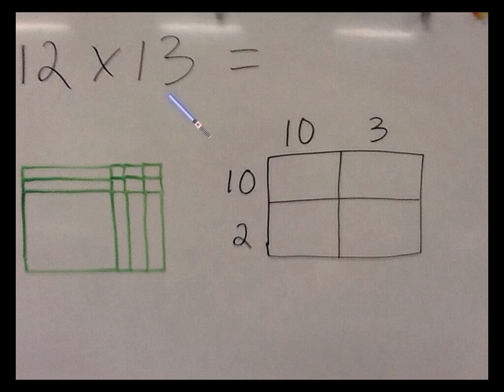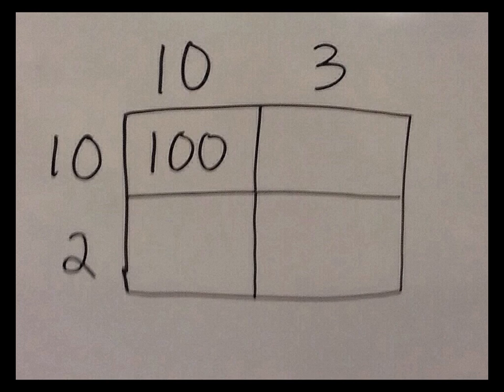Now this time let's start with this quadrant here, which means we're going to multiply 10 times 10. Just pretend this is a regular rectangle: 10 length, 10 width. We multiply to get the area, it's 100. For the next one we're going to multiply 2 times 10 and get an answer of 20.